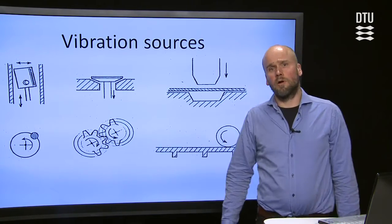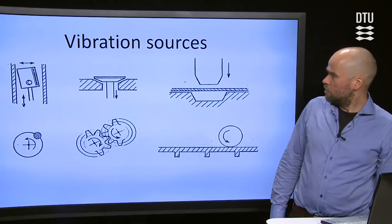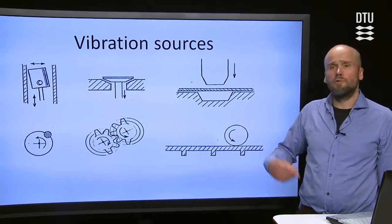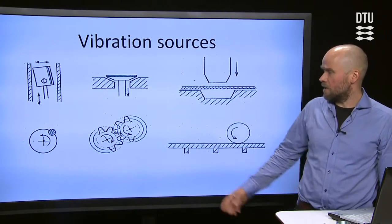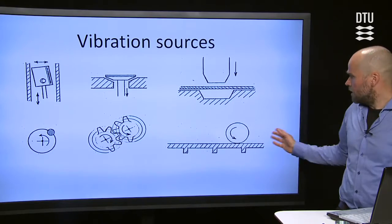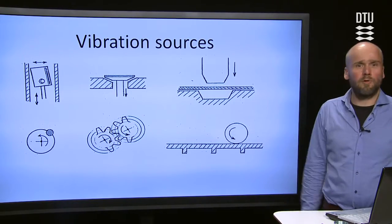Other types of sources are periodic in time and typically then they are due to rotating machines and unbalanced rotating machines or gearboxes, but it can also be a wheel moving over a periodic structure.